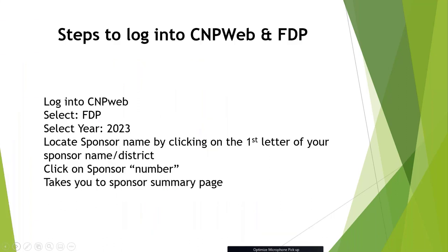Steps to log into CNP and FDP: You will log into your CNPweb and select FDP. Make sure that you select Year 2023. Then locate the sponsor name by clicking on the first letter of your sponsor name or district. After you find your sponsor name, click on the sponsor number to the left-hand side. This takes you to the sponsor summary page.